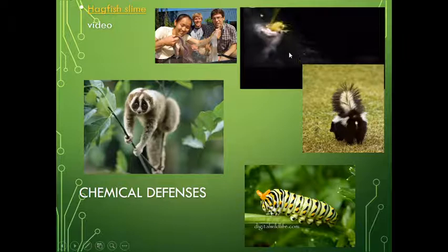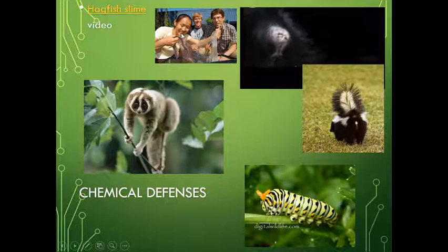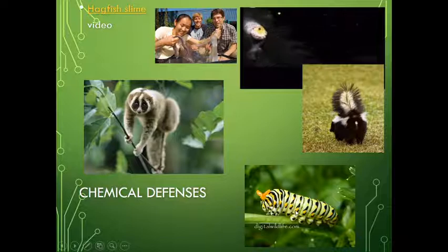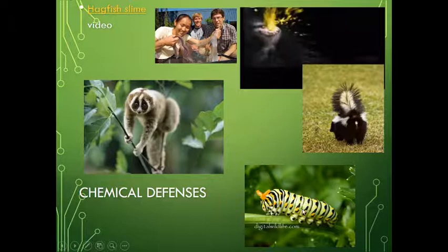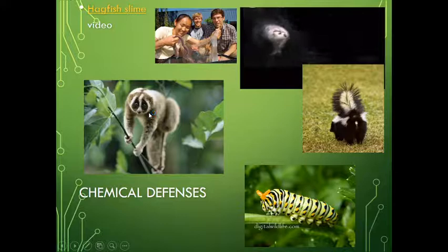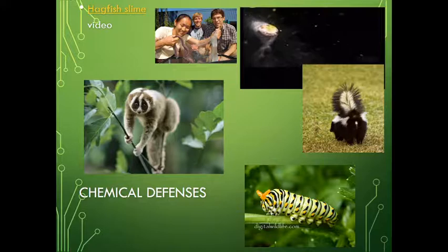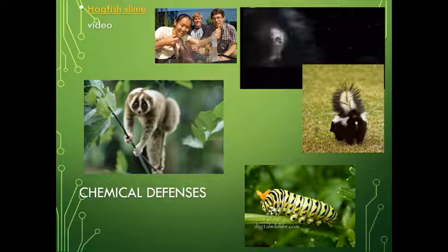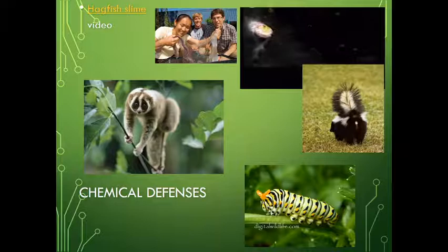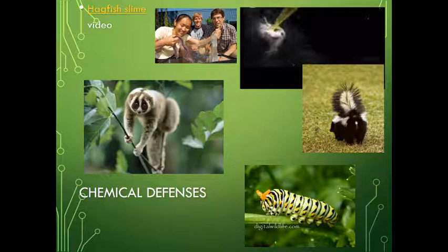Chemical defenses are another example. The skunk is a great example — here is a skunk spraying its bad-smelling liquid to scare away a predator. Hagfish slime is another example: if you grab a hagfish, it creates slime that gunks up the mouth of a fish. Brightly colored caterpillars have chemicals that either taste really bad, have toxins, or inject toxins when touched. And the slow loris has an irritating chemical it can use — not really a venom, but it keeps organisms from eating it.